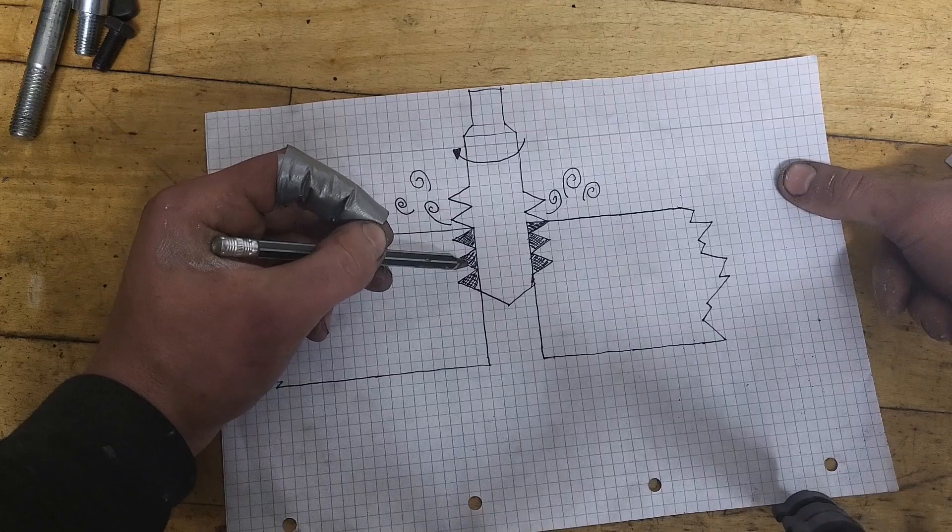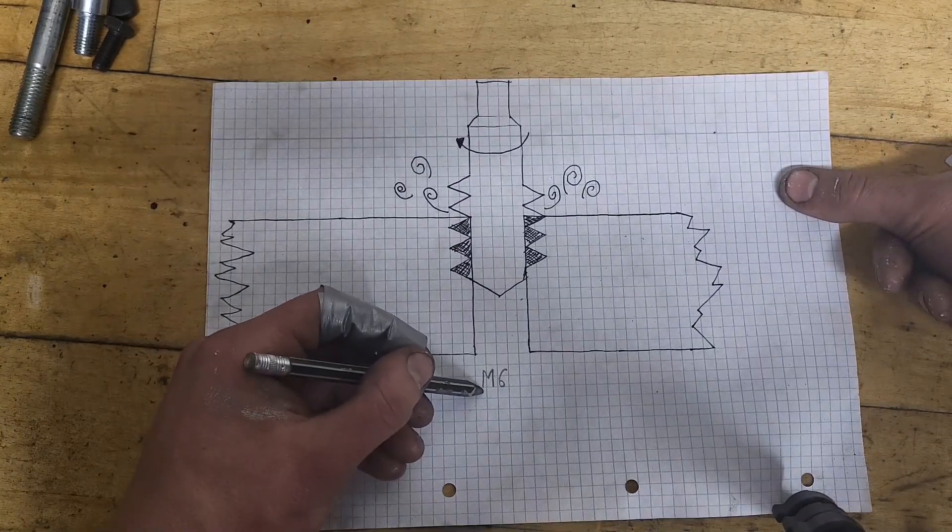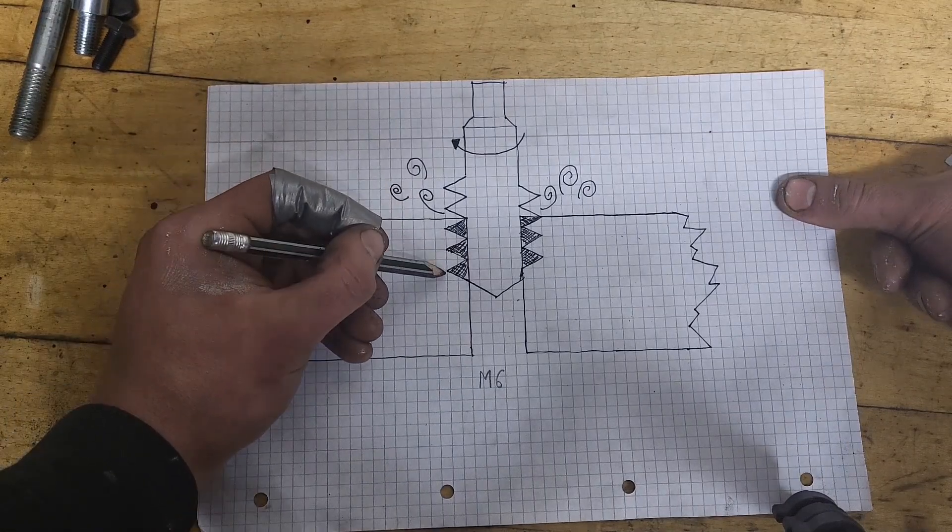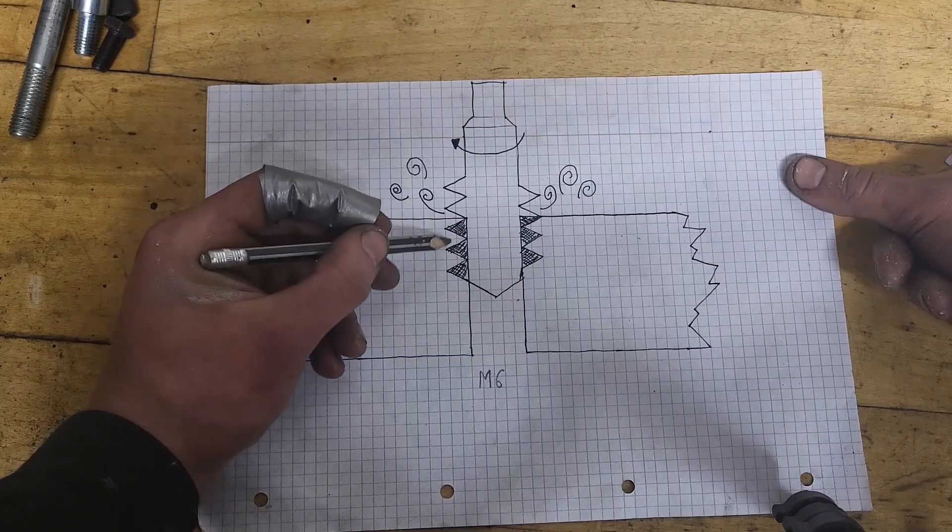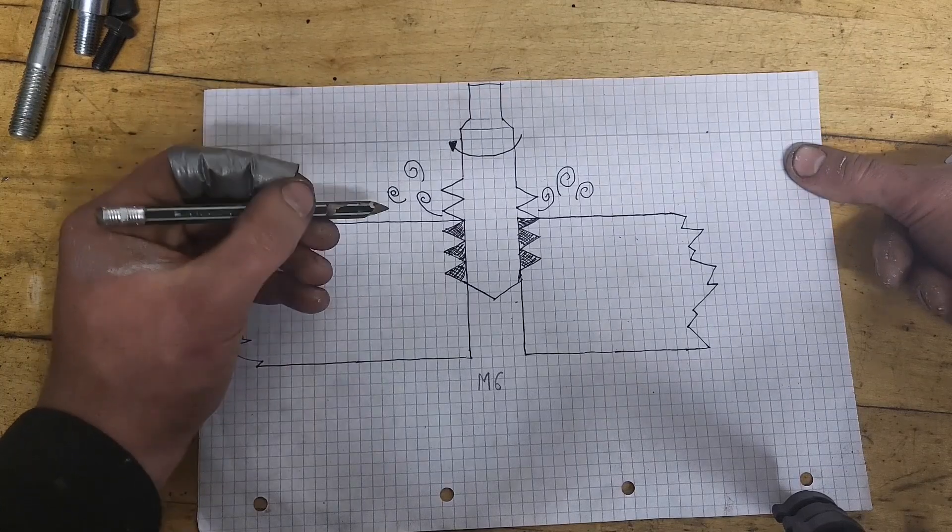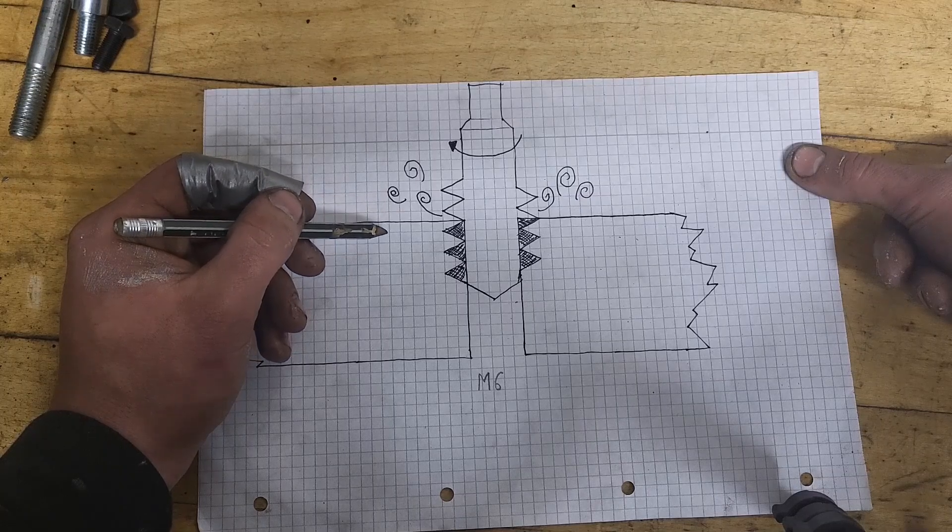When you have drilled your pilot hole, it's time to insert the tap. In the case of the M6 bolt, each revolution of the tap results in an increase in depth of one millimeter, which matches the pitch of exactly one millimeter. Thus, two turns will result in two millimeters of depth increase.